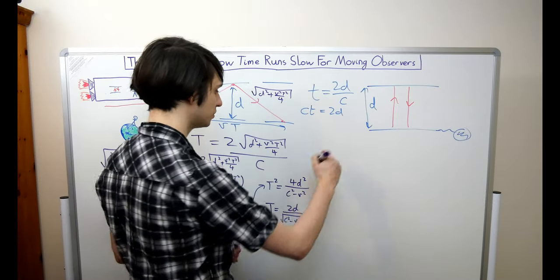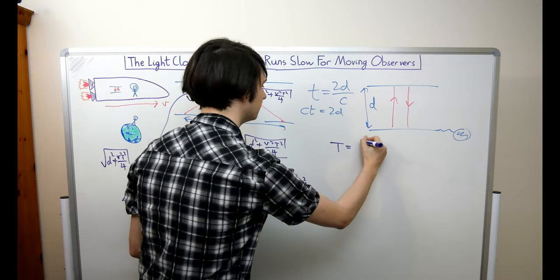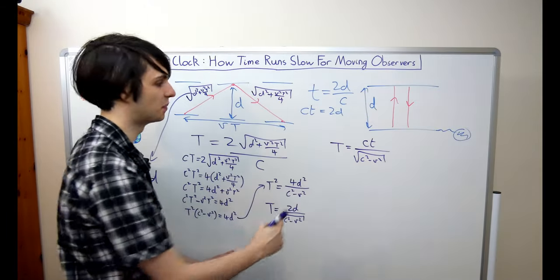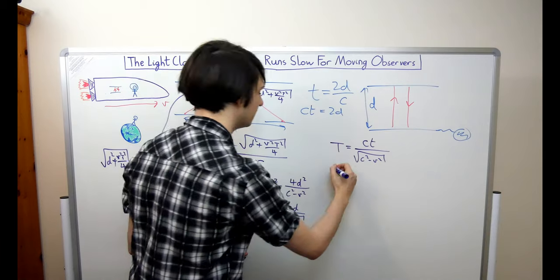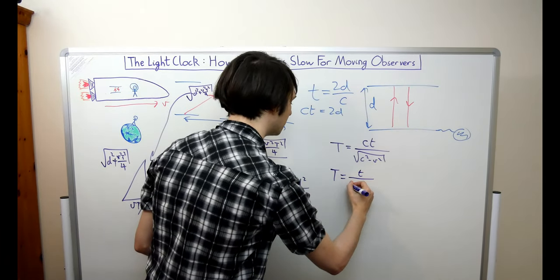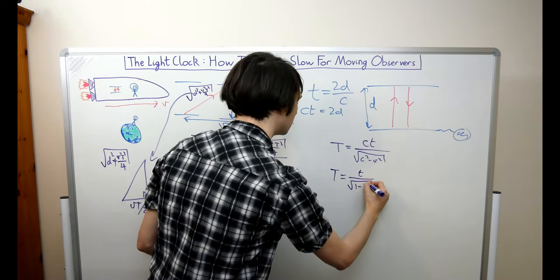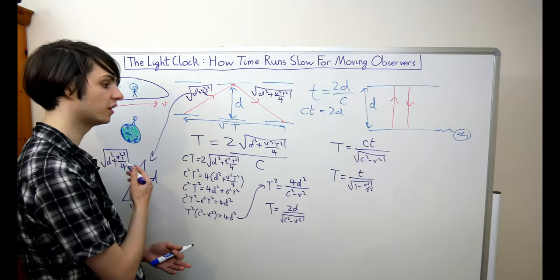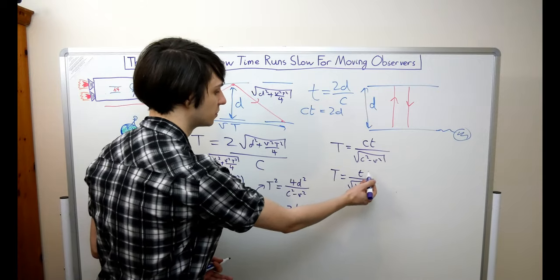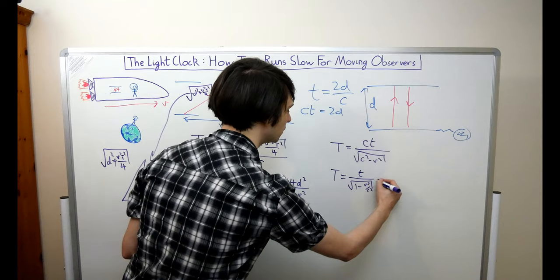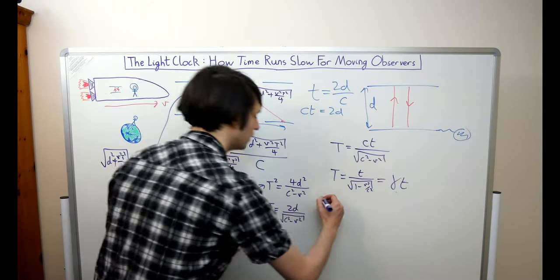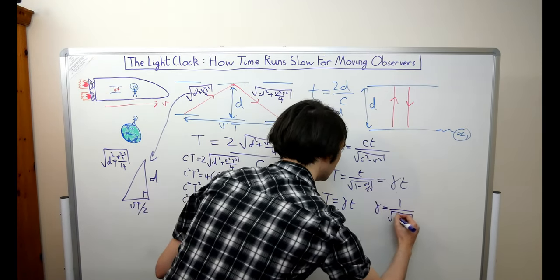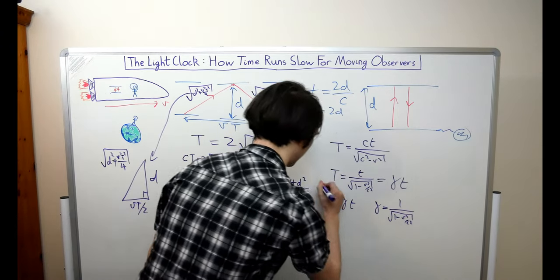This tells us that capital T is equal to c times little t divided by the square root of c squared minus v squared. We can tidy this up by dividing the top and bottom of our fraction by c, giving us capital T equal to little t divided by the square root of one minus v squared divided by c squared. This tells us that the time between ticks of the light clock as measured by the observer on earth equals the time between ticks as measured by the astronaut multiplied by a factor called the gamma factor. So we have capital T equals gamma times little t, where gamma equals one divided by the square root of one minus v squared over c squared. And that is our final result.